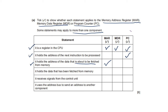The next statement: it holds the data that has been fetched from memory — that is MDR. The next statement: it receives signals from the control unit — all of the registers receive signals from the control unit, so MAR, MDR, and PC.